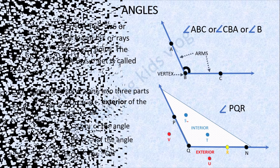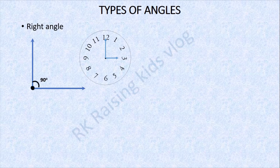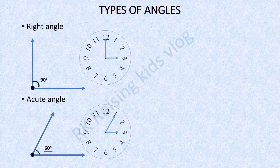Now we are going to know about the types of angles. Commonly there are four types of angles. First is right angle — if the angle is measuring exactly 90 degrees, it is called a right angle. Example: 3 o'clock. Next is acute angle — an angle measuring from 0 degrees to 90 degrees is called an acute angle. Example: 60 degrees.